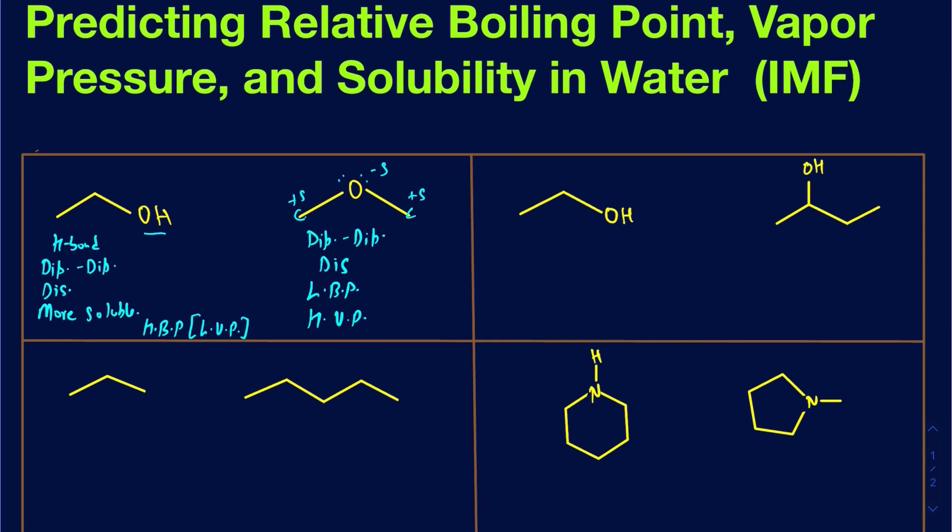Remember, vapor pressure and boiling point are inversely related to one another. If something has a high boiling point, it's less likely to vaporize quickly, and if it's making less vapors on the surface of the liquid, it's going to have less vapor pressure.